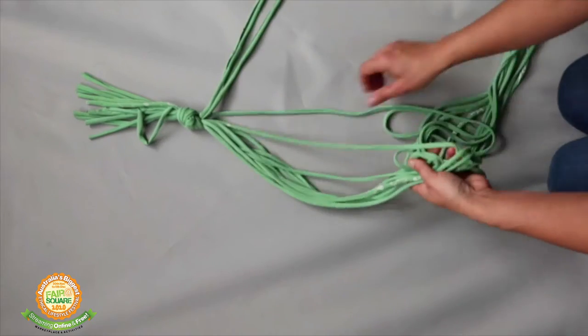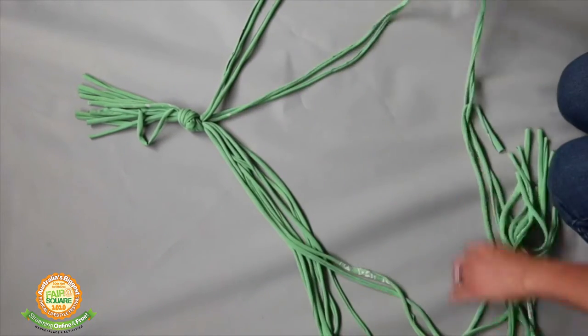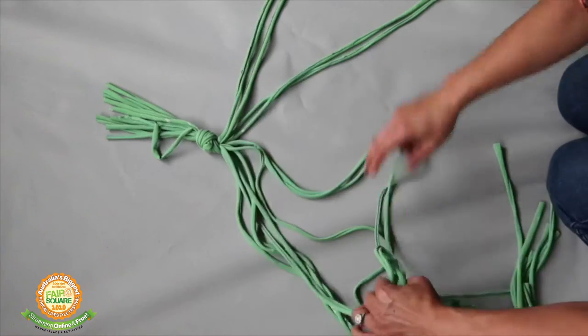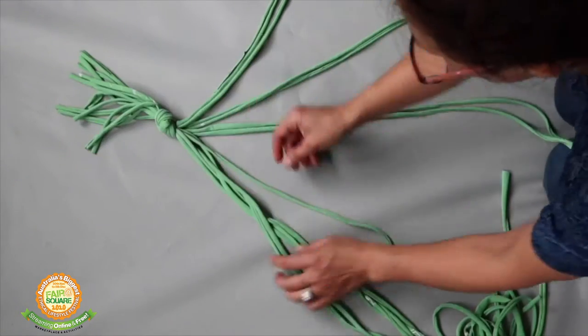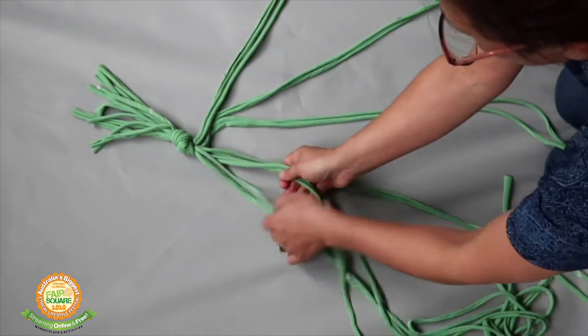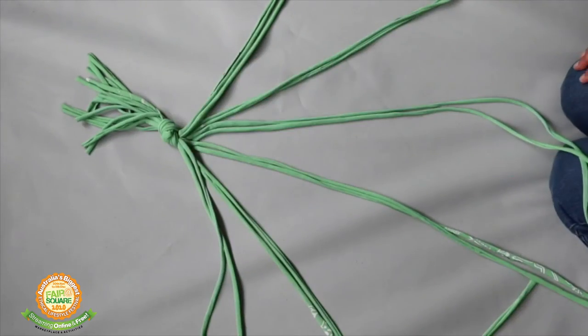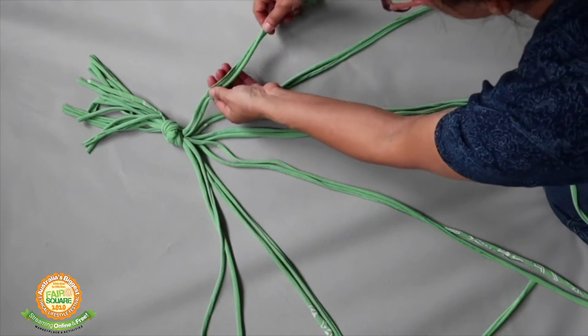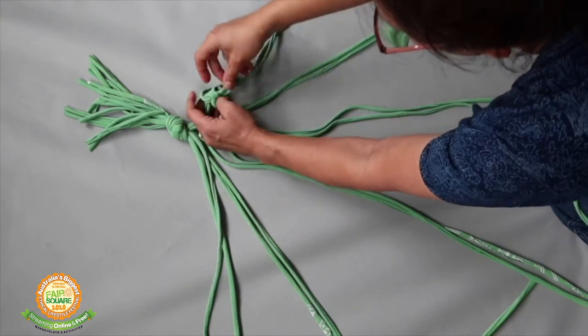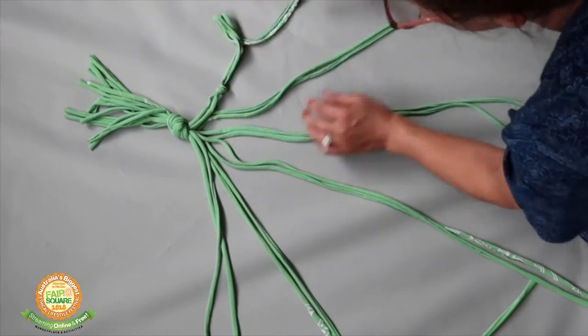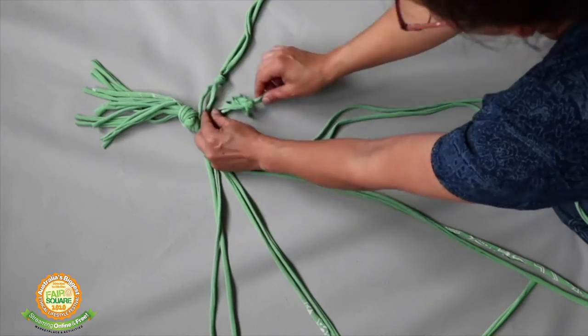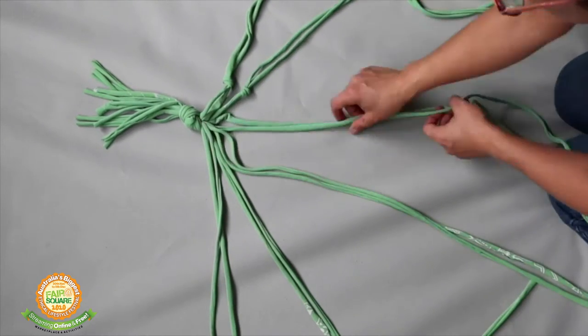We spread out the strands in pairs, so six lots of two spiraling out like a fan. Once you've done that, we're going to tie a knot in each pair. Each of the six pairs will get a knot tied in them, not too hard at the start so don't pull it super tight in case you need to adjust it.